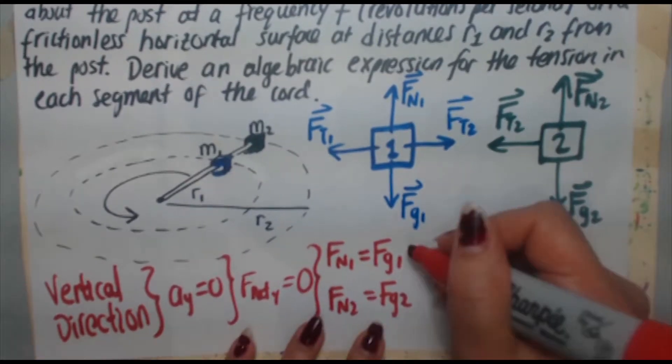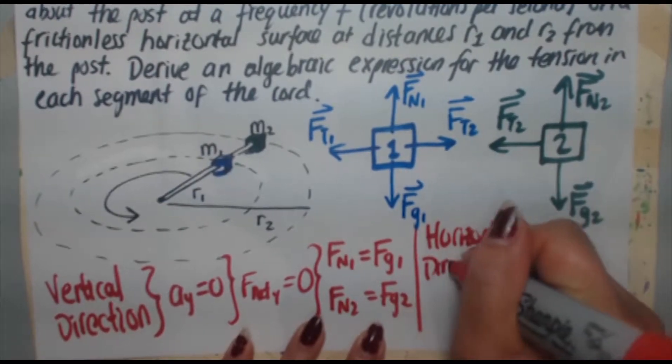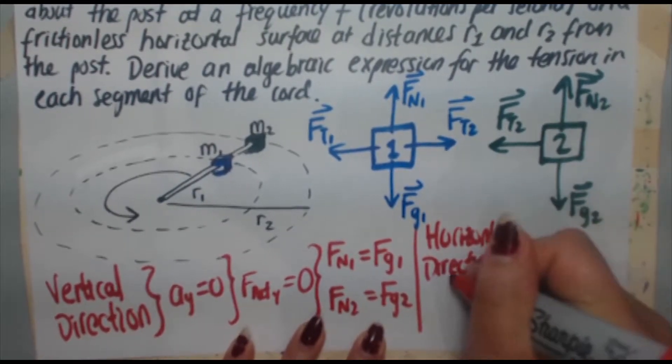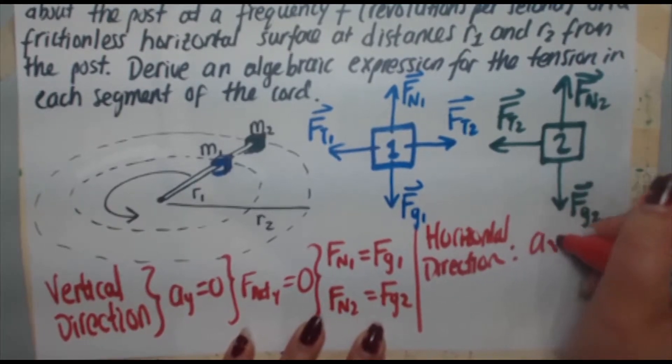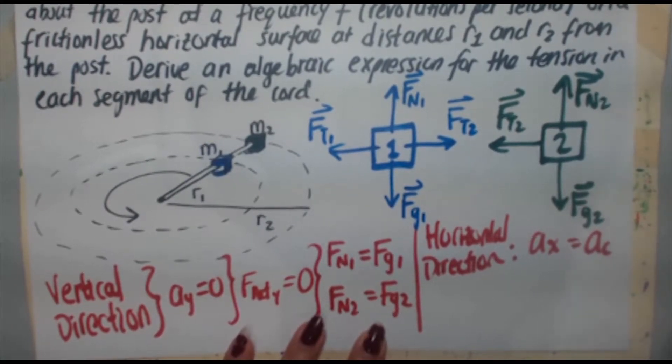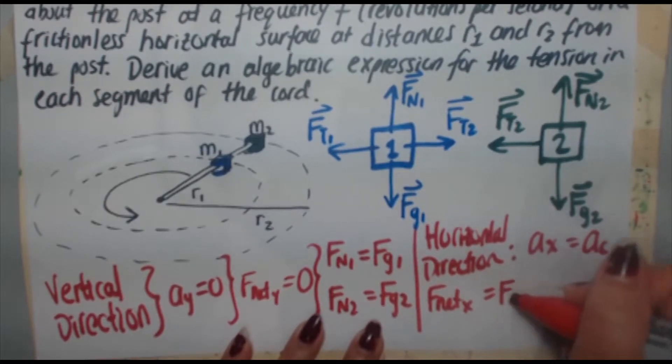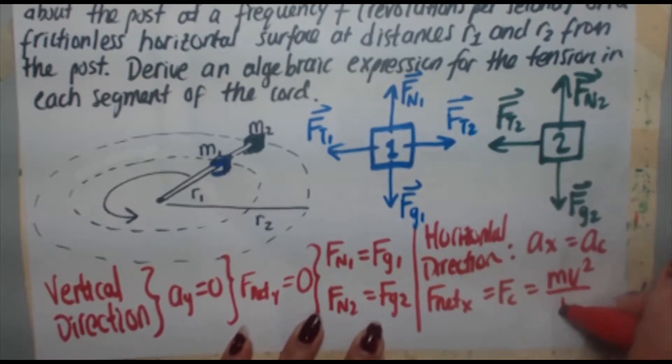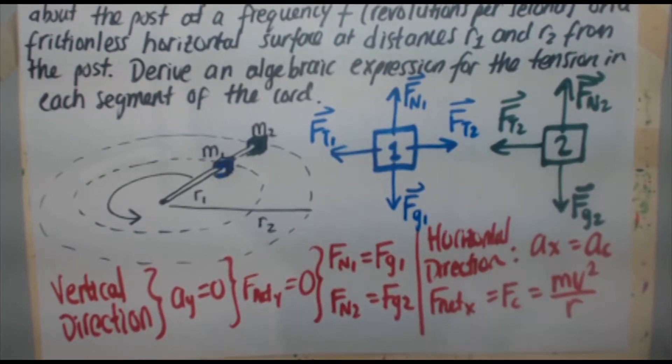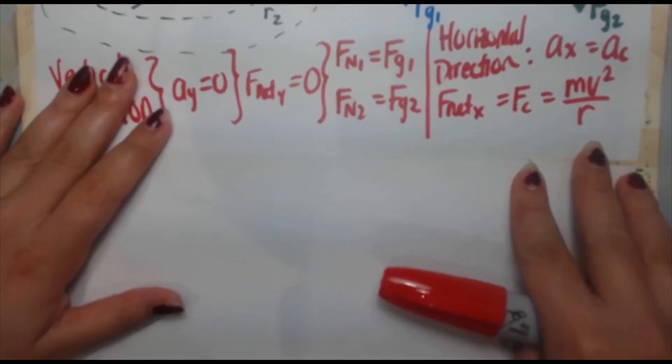Now, in the horizontal direction, we can make a similar statement, except in the horizontal direction, of course, there is acceleration. It is moving in a circle. So we can say that the x-acceleration is due to the centripetal force, so it's centripetal acceleration. And if that's the case, then that means that the net force in the x-direction is equal to the centripetal force, which is mv squared over r. Now, we got a few things happening here. The next step I want to do is actually look at the speed and look at how we can express it more conveniently.